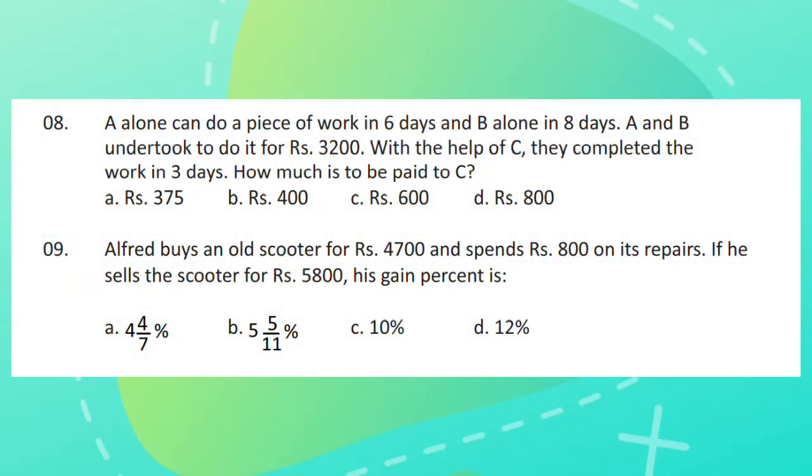Question 8. A alone can do a piece of work in 6 days and B alone in 8 days. A and B undertook to do it for Rs. 3,200. With the help of C they completed the work in 3 days. How much is to be paid to C?